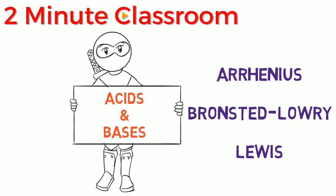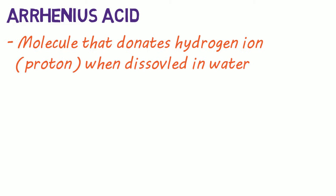The Arrhenius definition is probably the most familiar to you. An Arrhenius acid is a molecule that will donate a hydrogen ion, or a proton, when dissolved in water. We call it a proton because a typical hydrogen atom has only one proton and one electron. So if you make it a cation by removing the electron, all you have is a proton.